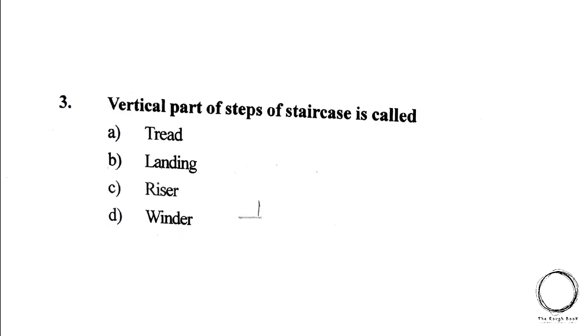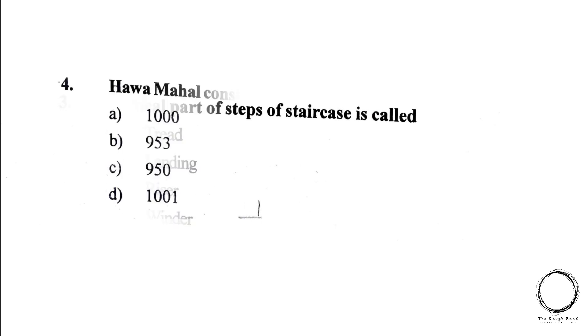Next, the vertical part of steps of a staircase is called A. Thread, B. Landing, C. Riser, D. Winder. The right answer is option C, Riser.